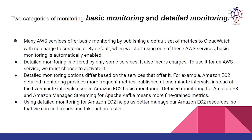Detailed monitoring options differ based on the services that offer it. For example, Amazon EC2 detailed monitoring provides more frequent metrics published at one-minute intervals instead of the 5-minute intervals used in Amazon EC2 basic monitoring. Detailed monitoring for Amazon S3 and Amazon managed streaming for Apache Kafka means more fine-grained metrics. Using detailed monitoring for Amazon EC2 helps us better manage our resources so that we can find trends and take action faster.